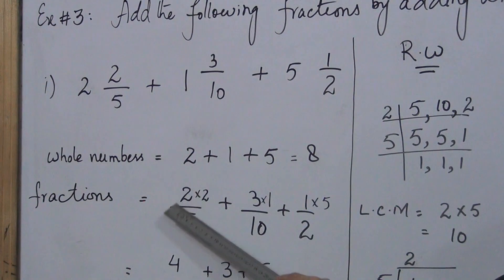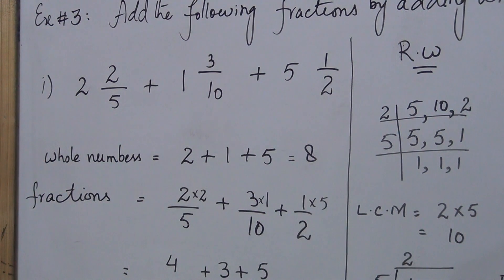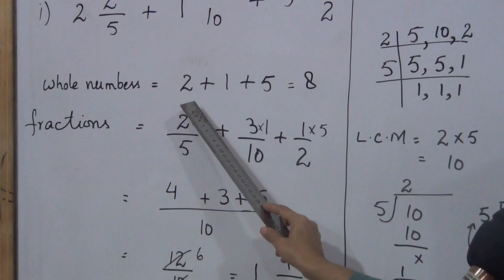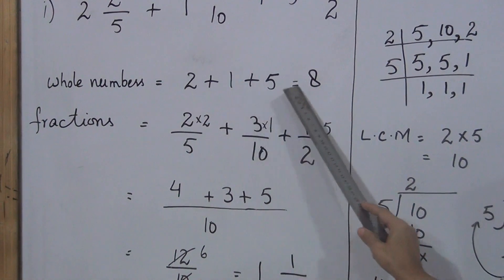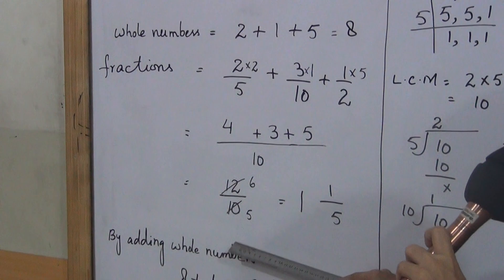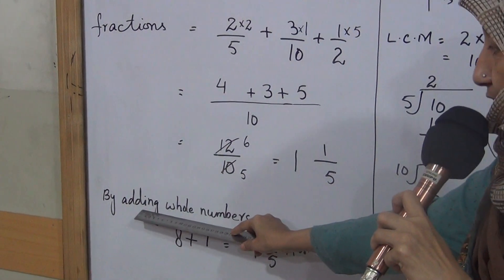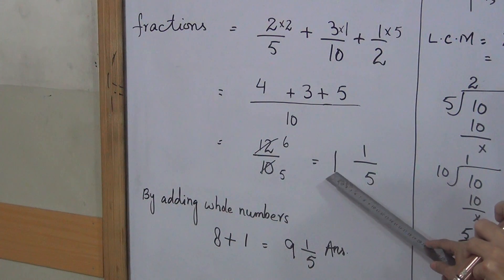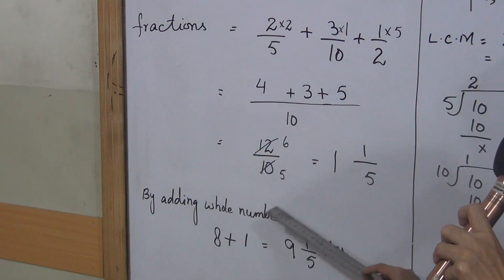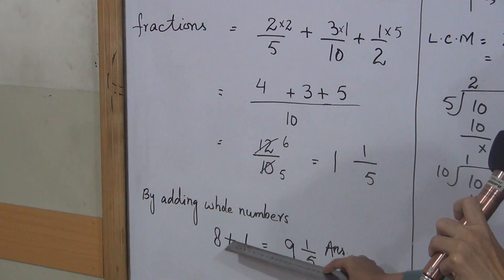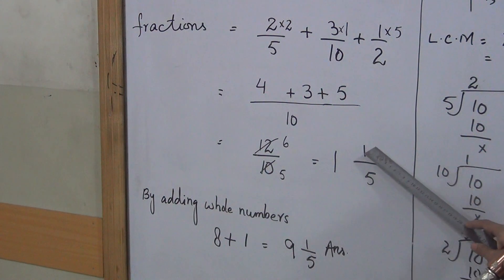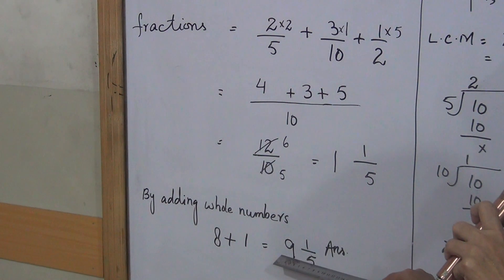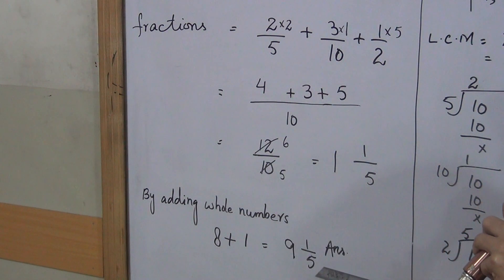This fraction part gave us 1 whole number 1 upon 5. We had separated the whole numbers earlier: 2 plus 1 plus 5 equals 8. Now the fraction part added 1 more whole number. So 8 plus 1 is 9. The fraction value was 1 upon 5. The final answer is 9 whole number 1 upon 5.